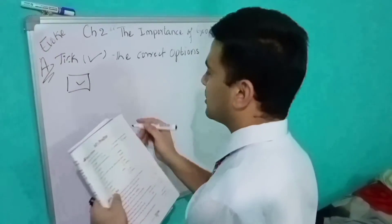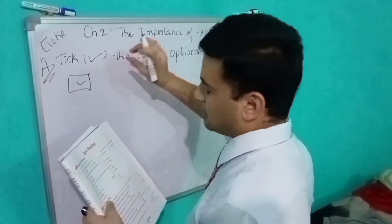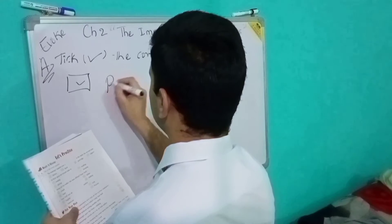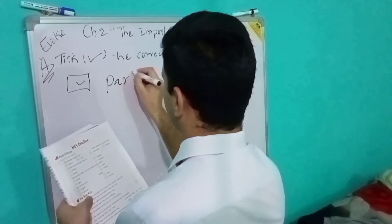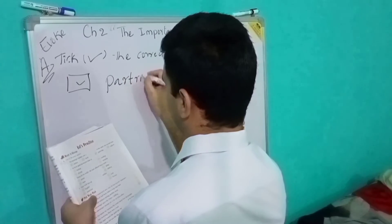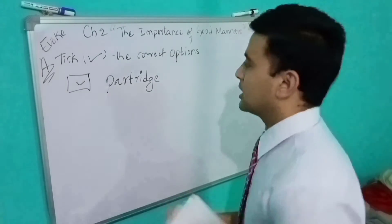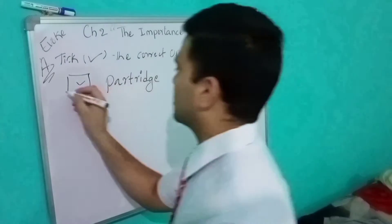So you have to tick inside the box as well as write in the fill-in-the-blanks. Number one answer is partridge: P-A-R-T-R-I-D-G-E.